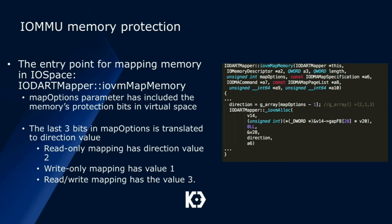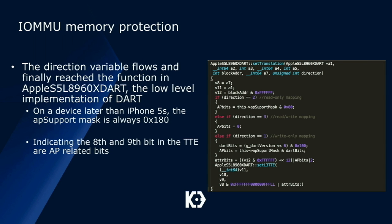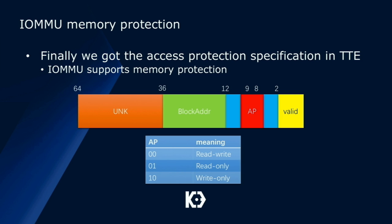This direction value reaches the lower-level function setTranslation. From the code logic, we can clearly see that the 8th and 9th bits in the TTE entry are AP-related bits. We get the access protection specification in TTE for IOMMU on iOS: AP bits 00 stands for read-write, 01 for read-only, and 10 for write-only.